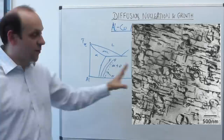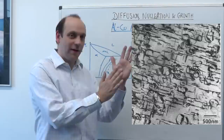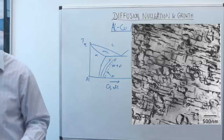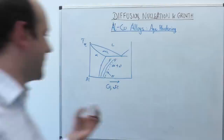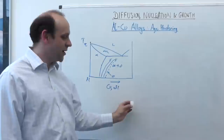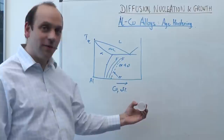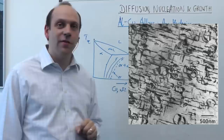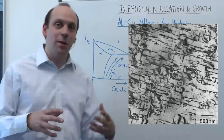A micrograph of the θ' phase in aluminium-copper shows little disk shapes — little circles and lines — because you're viewing the disks either flat on or edge on. There's an orientation relationship with the matrix. Viewing the disk face-on you see a circle; edge-on you see a line. What you're seeing are circles and lines of the θ' phase in an Al-Cu alloy that's been aged part way through the transformation sequence.